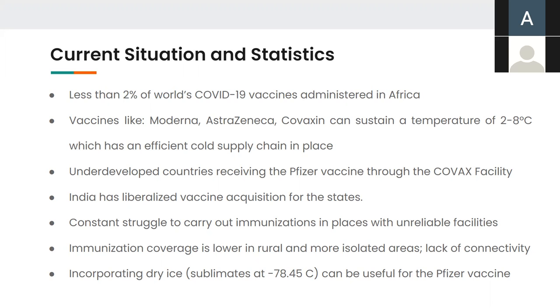Through research of different materials, we also came across dry ice, which has a very low sublimation temperature of minus 78.5 degrees Celsius and is an efficient coolant, which could be incorporated in our vaccine box to maintain Pfizer vaccine at its optimum temperature.